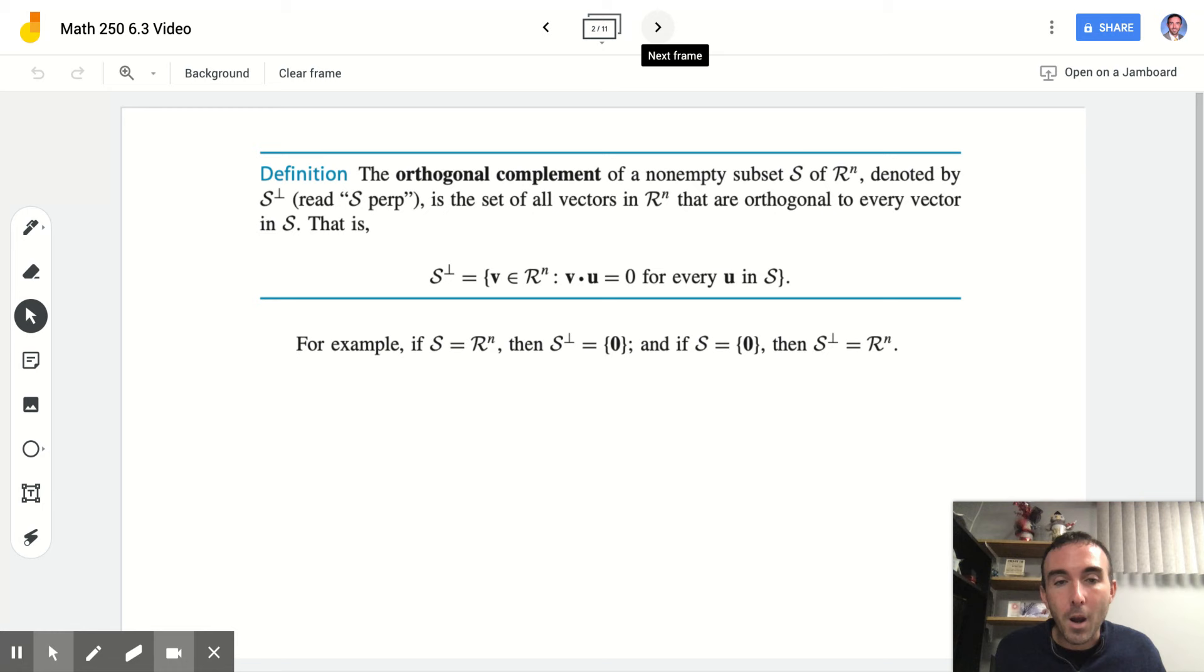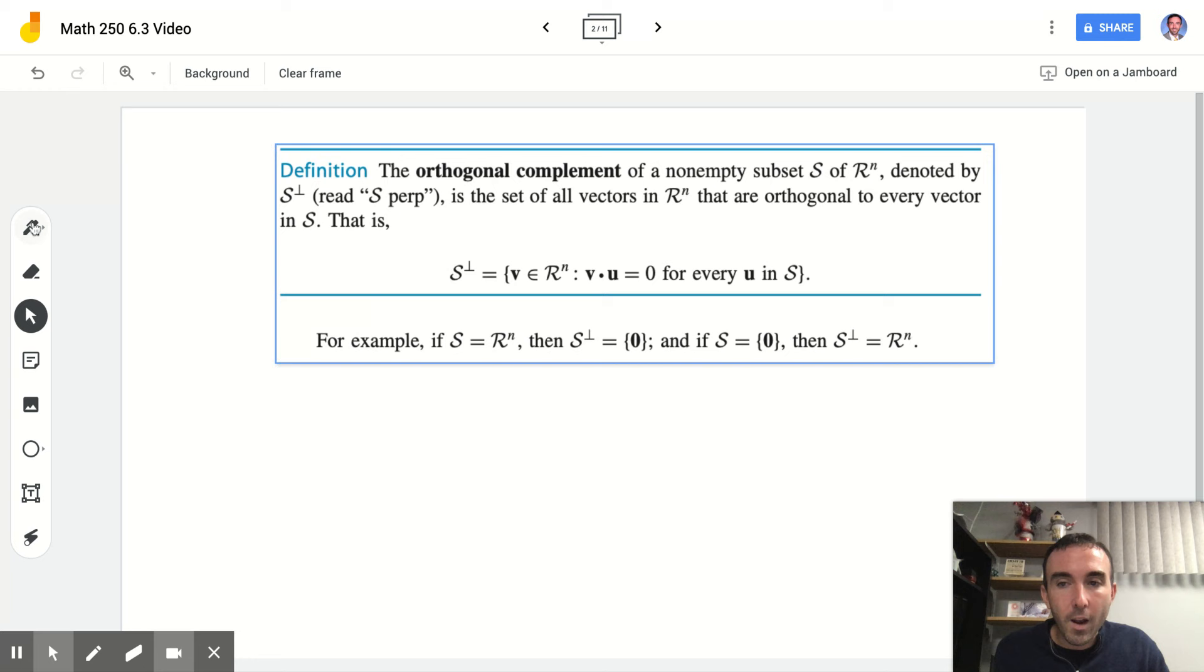That is, S perp consists of every vector in R^n such that the dot product of those vectors in R^n, call them V, with U is 0. Some examples of orthogonal complements: If S is all of R^n, its orthogonal complement would be the 0 vector, because you always get out a 0 dot product. And vice versa, if S is 0, then the orthogonal complement to S would be R^n.